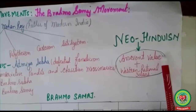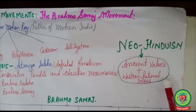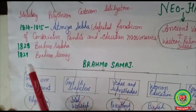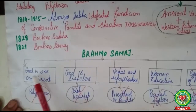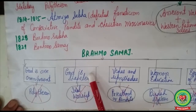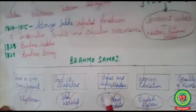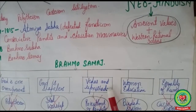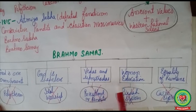His policy was to establish Neo-Hinduism — the amalgamation of ancient values and western rational ideas. By Brahmo Samaj, he propagated that God is one and omnipresent. By saying God is one and omnipresent, he denounced the idea of polytheism. He also said God is shapeless, meaning we should not do idol worship. His third ideal was that the Vedas and Upanishads were the true source of knowledge, so he did not believe in priesthood or pandits.